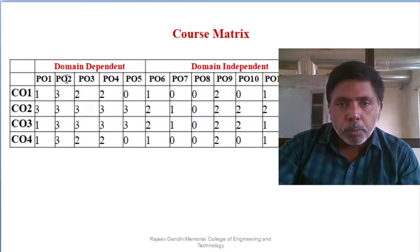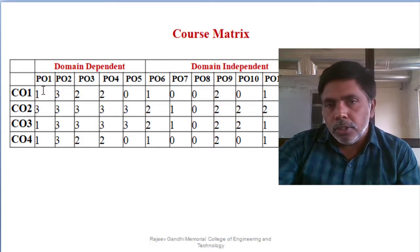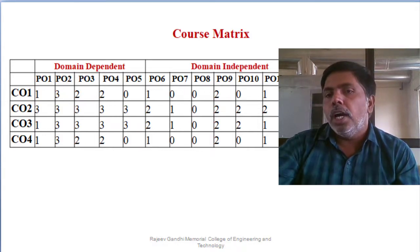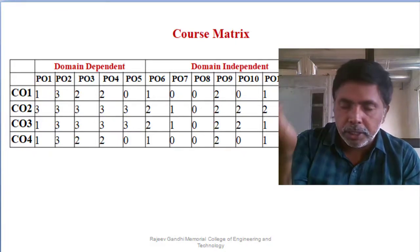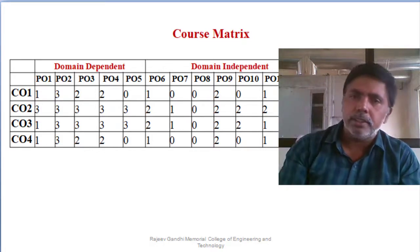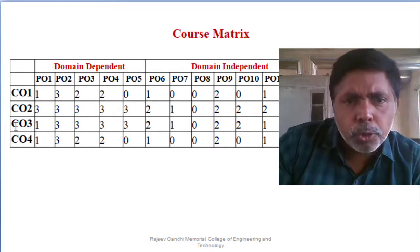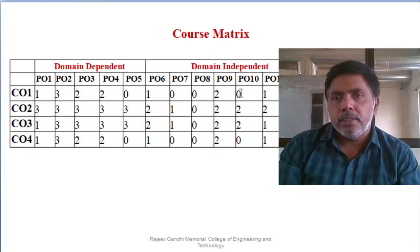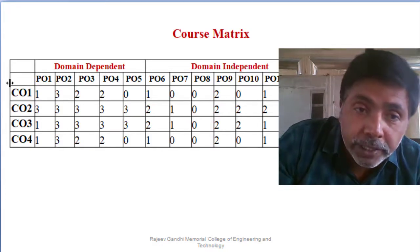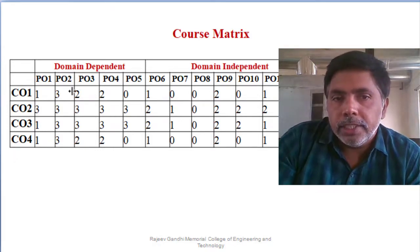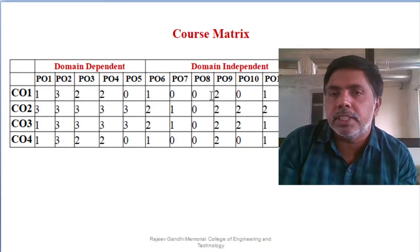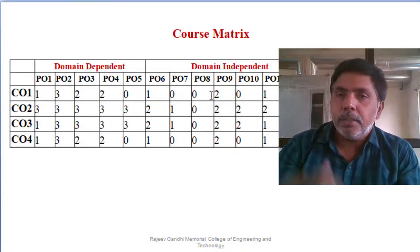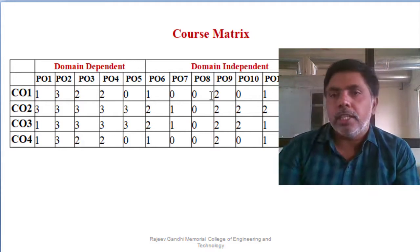In the course matrix, we map each course outcome to program outcomes. By attaining CO1, you can attain certain program outcomes. PO1 to PO5 are domain-dependent; PO6 to PO12 are domain-independent. Program-specific outcomes are defined by the department. The scaling used is: 3 means fully attained, 2 means 60% attained, 1 means 33% attained, 0 means not attained.